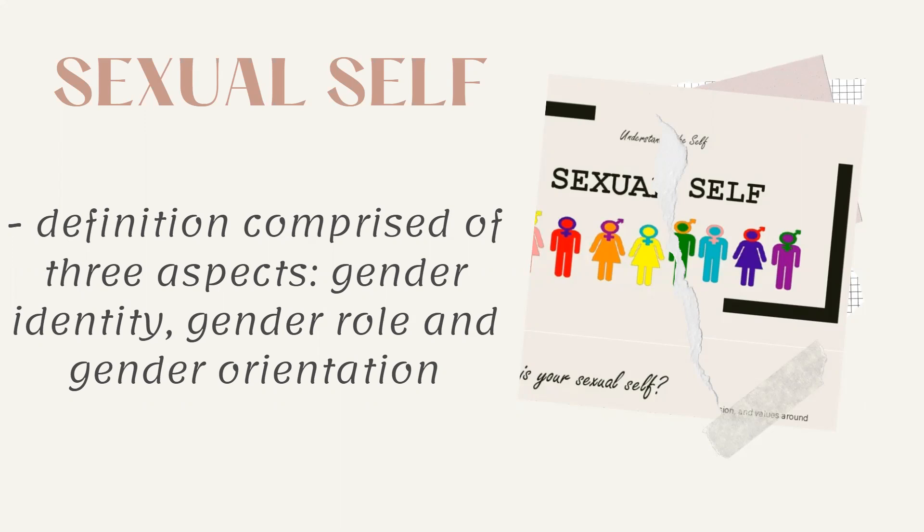Now, what is sex? Gender and sex are both things we see on bio data. Sex is the biological differences between male and female, such as whether someone has a penis or vagina. That is the difference between gender and sex.